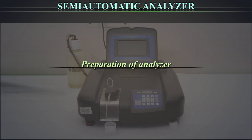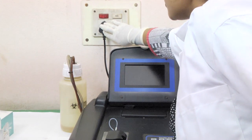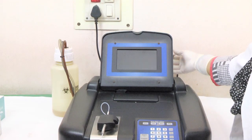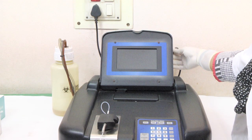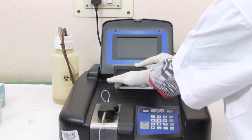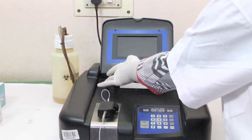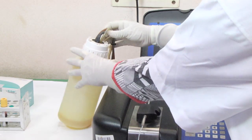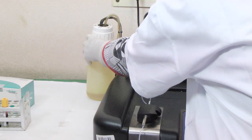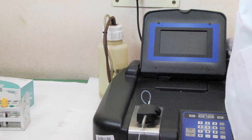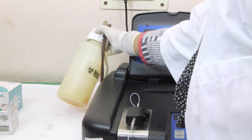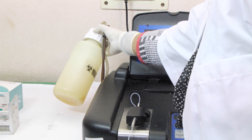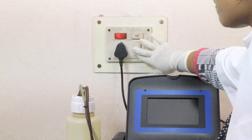Preparation of Analyzer: Check the power supply and make sure it can supply proper voltage for the analyzer. Check if the power cord of the system is properly connected. Check and make sure sufficient printing paper is prepared for the printer; if not, feed more printing paper. Check if the waste tube at the back of the system is connected to the waste bottle or other disposal channels. Check if the waste bottle is full; if yes, empty the waste bottle.